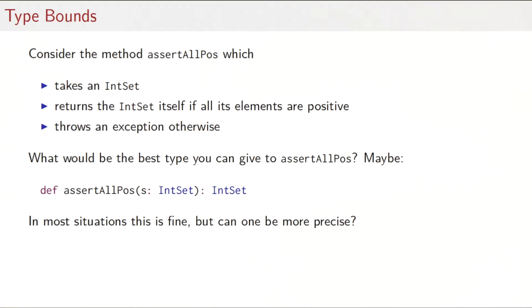In fact, if we look at the behavior of assertAllPos, then we see that it's governed essentially by two equations: assertAllPos of Empty is Empty, and assertAllPos of a non-empty set is either the same set that we passed in, or it throws an exception. So what we see in particular is that if assertAllPos gets an Empty argument, it would give you back an Empty argument. And if it gets a non-empty argument, it would give you back a non-empty result. And that knowledge is actually not reflected in this type here. So how can we capture that additional knowledge?